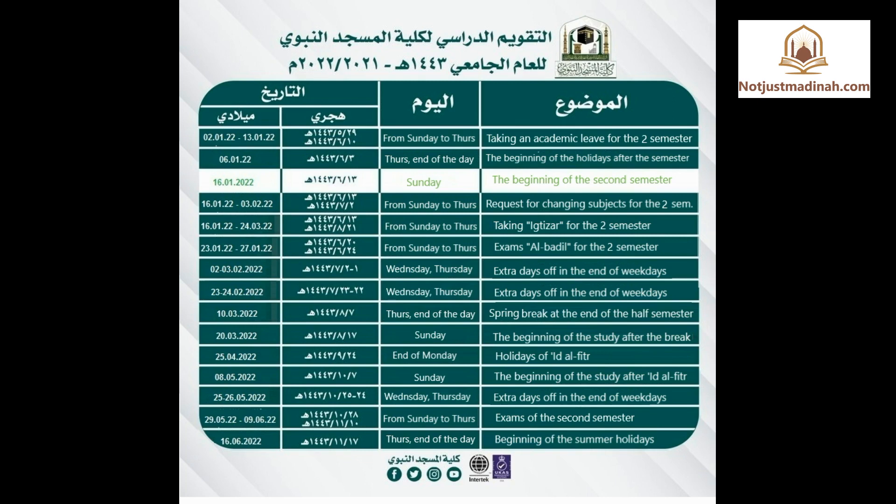The second line announces the beginning of the holidays after the first semester, from January 6th. The third line with a white background indicates the beginning of the second semester on January 16th. The next line talks about the possibility of changing the curriculum.